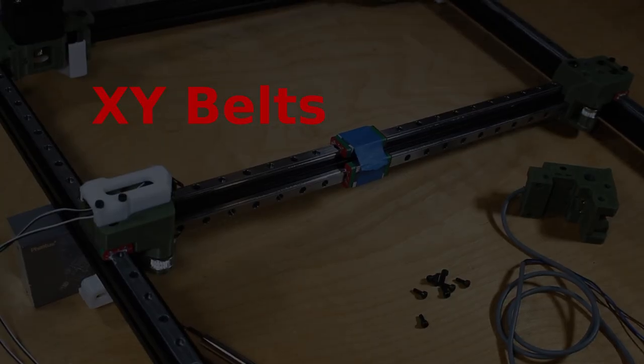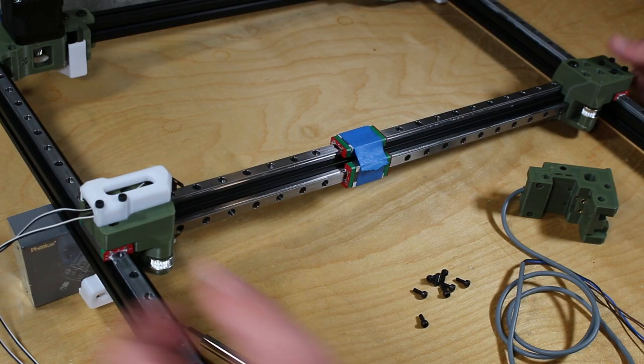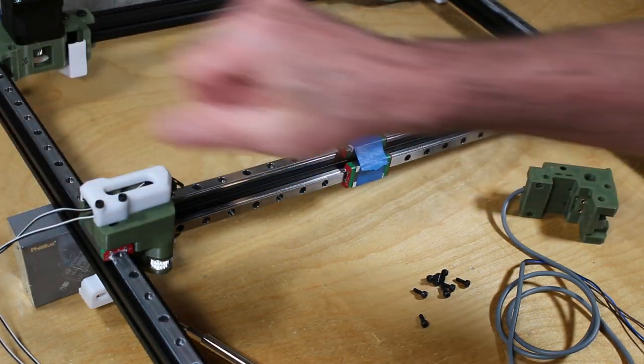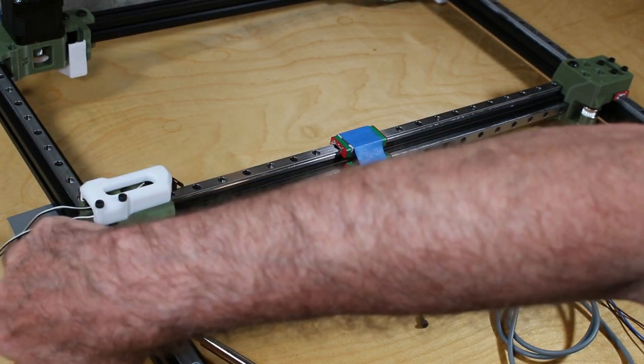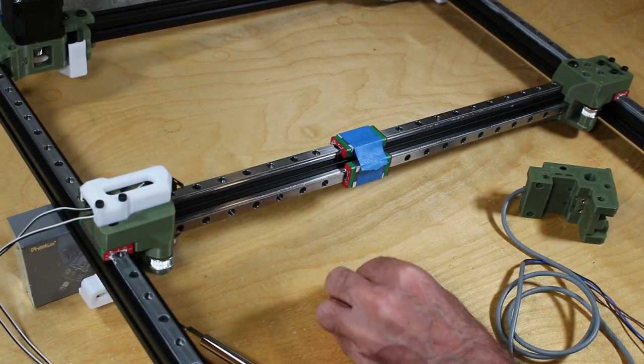And next we insert the XY belts. Notice I'm using the hot end box here as a prop for the left side. It happens to fit pretty nicely, you can use anything you like.